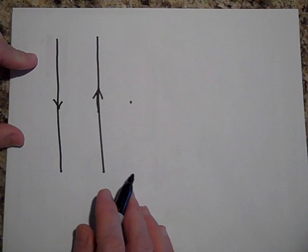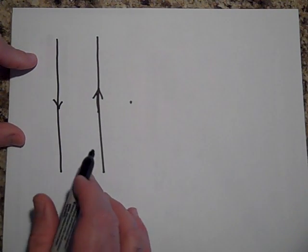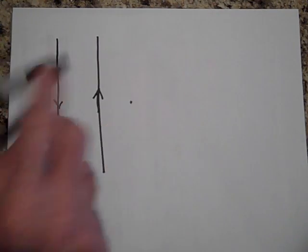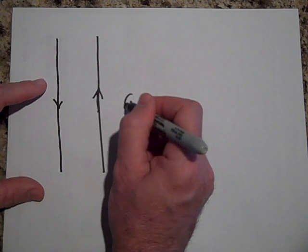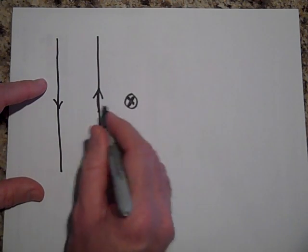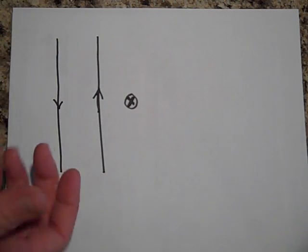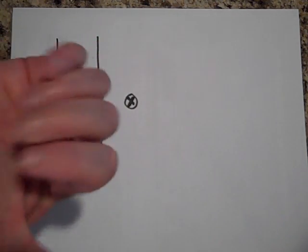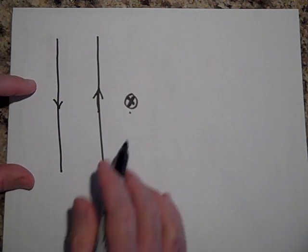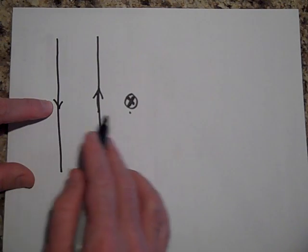Because if you think about it, the field from this guy right here is going into the page, so I'm putting a big strong X from there because it's really close, whereas the current from this guy is up, and that's going to be a weaker field, and so those don't cancel because this current is just further away.